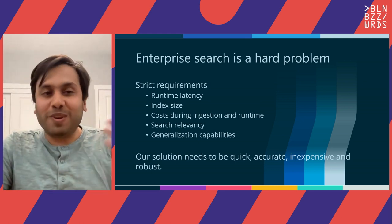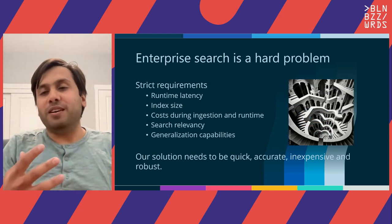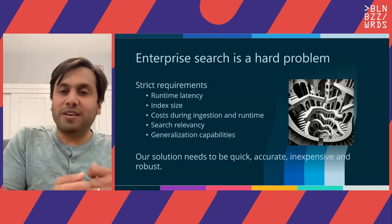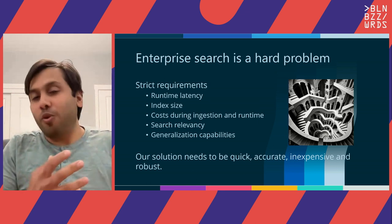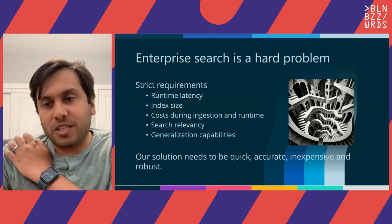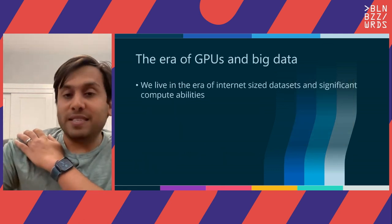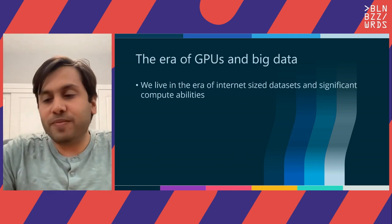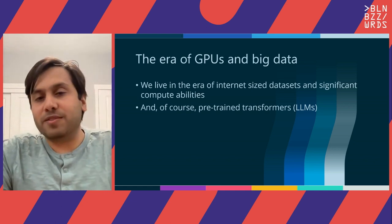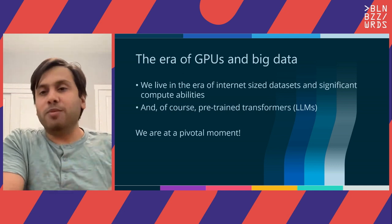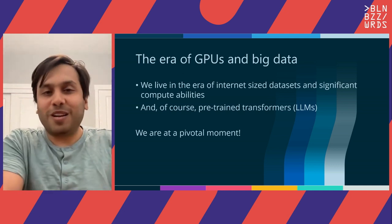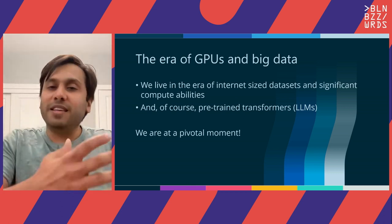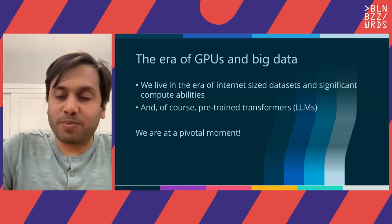Anyone who has worked on this problem knows that all of these requirements are intertwined with each other. There are solutions which are quick and accurate but aren't robust. There are some solutions that are inexpensive and robust but not so quick, and so on. So is it even possible to make progress on this problem? I believe the answer is yes, because we live in this era of internet-sized datasets and significant compute capabilities, and of course we live in the era of pre-trained transformers, which are LLMs. I do believe we are at this pivotal moment where we can make progress.